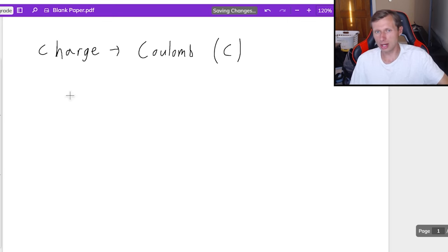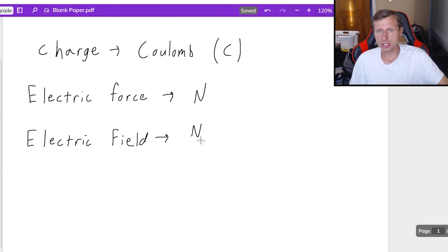And so there's a lot we can do with the coulomb. For instance, we can have the units for the electric force, which since it's a force, it's still newtons, capital N. But now, when we introduce the electric field, which is the force acting on a charge, then we get the units N divided by C, newtons per coulomb.